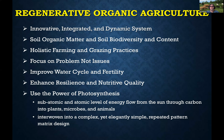What we're doing is we're actually utilizing the power of photosynthesis. We're utilizing the energy that comes from the sun at both a subatomic and atomic level of energy flow from the sun through carbon into plants, microbes, and animals. Really getting that interwoven complex, yet elegantly simple repeated pattern design matrix where all of these biological organisms are following the same rules and design.